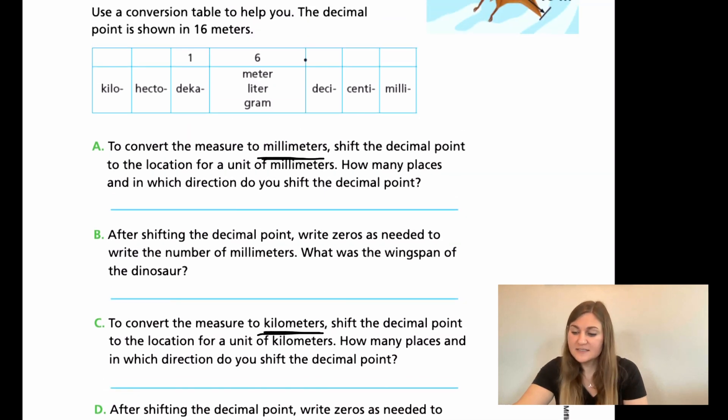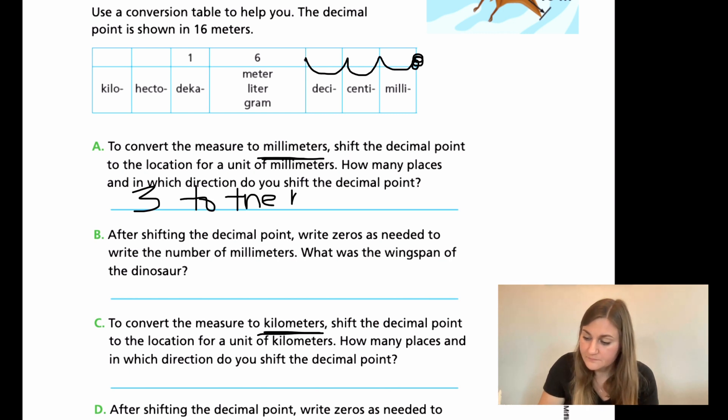All right, great. Let's go ahead and solve these. So for A, I'm starting at my decimal point and I'm going to move it one, two, three times so that my decimal point is now at the millimeters. So I moved it three places and in which direction? I did three to the right. It says after shifting the decimal point, we want to write zeros as needed. So are there any empty spots? Yeah, all three of my jumps are empty spots. So I'm going to do a one, a two and a three zeros there. So when I write it, I have 16 and three zeros. So that is 16,000. And then the units that we found were in millimeters. That's just going to be mm for millimeters.